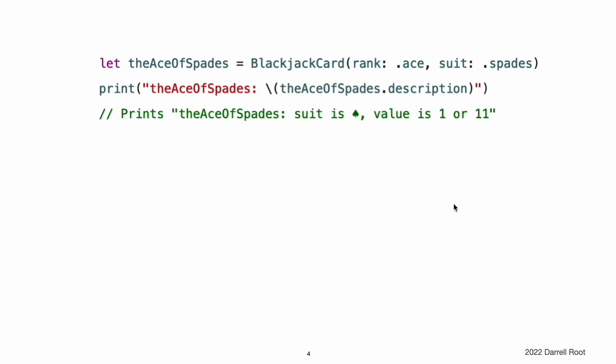Because BlackjackCard is a structure with no custom initializers, it has an implicit member-wise initializer, as described in member-wise initializers for structure types.